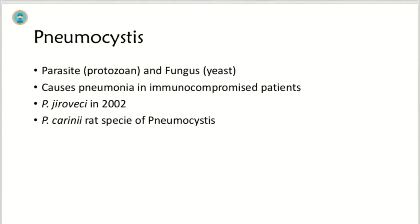Pneumocystis — is it a parasitic protozoan or a fungus? There's a big debate about that. For now we can call it a protozoan and a fungus too. It is responsible for causing pneumonia in immunocompromised patients. Pneumocystis jirovecii was discovered in 2002 and this is a human species because it is responsible for causing infections in human beings. Another species of Pneumocystis is Pneumocystis carinii, which is a rat species.